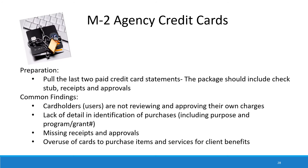The next area of review is agency credit cards, including any corporate card, Visa, MasterCard, as well as any store cards. Many agencies have cards at Walmart, Lowe's, Home Depot, or Menards. We are going to ask to see the last two paid credit card statements, and we want the package to be similar to what we see in cash disbursements — including the check stub, all the receipts, and appropriate approvals. What we find often is that cardholders are not reviewing and approving their own charges, there's a lack of detail identifying purchases including the purpose and program or grant number, we're missing receipts and approvals, and there's an overuse of cards to purchase items and services for client benefits.